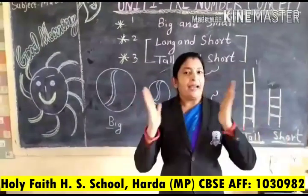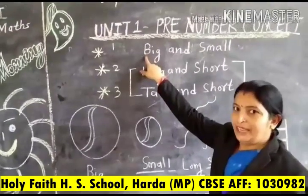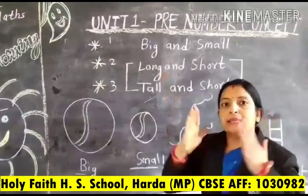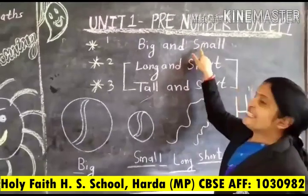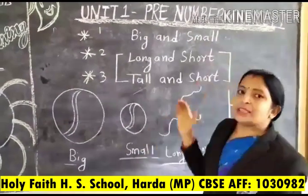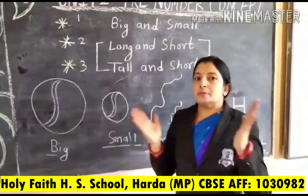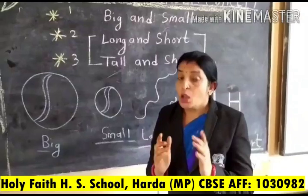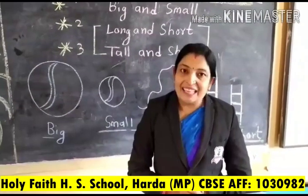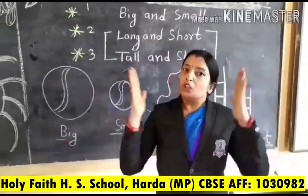Big and small, big and small. How to spell big? B, I, G — big. Big means bada. Small means chota. Big means bada. Small means chota. Okay. When we compare the object, we will say big and small.